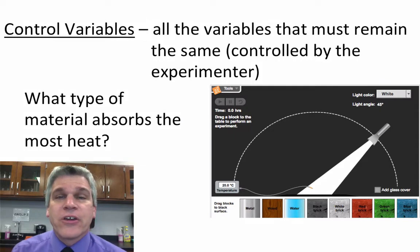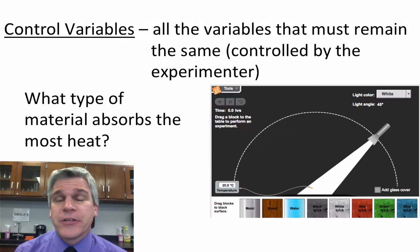The last variable are the control variables. Now, these are all the variables that have to remain the same. They are typically controlled by the experimenter. And that's you.